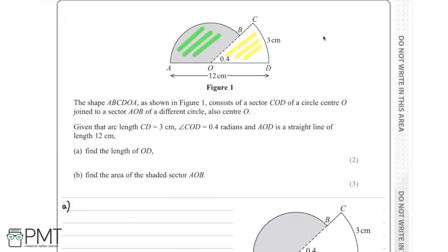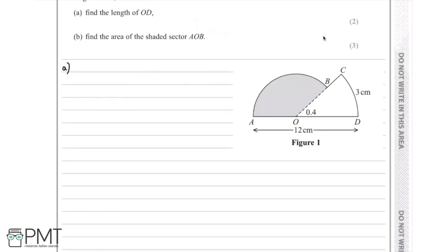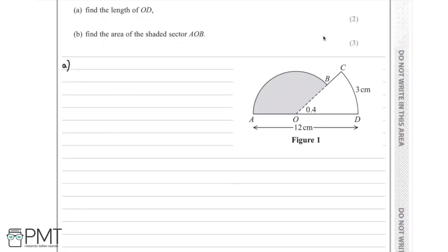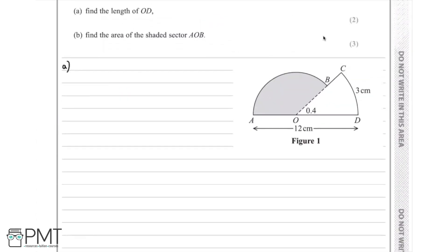I'll copy the diagram out here to make things easier going forward. We first note O to D. Since O is the center of the circle, OD will be equal to the radius. Then we need to think what other information we have. We have the angle here which is 0.4 radians.